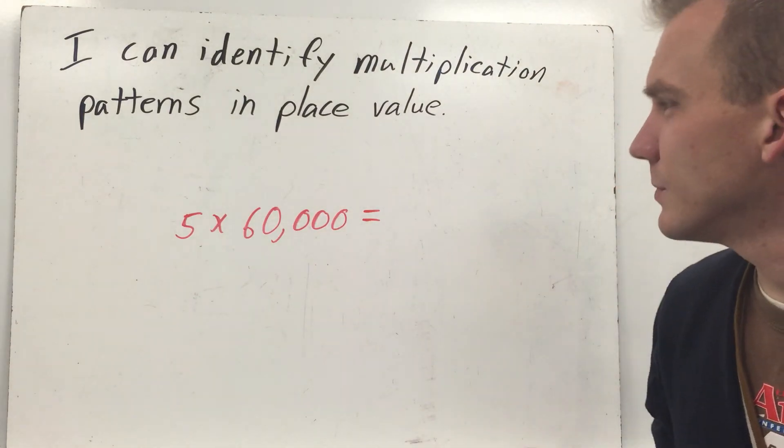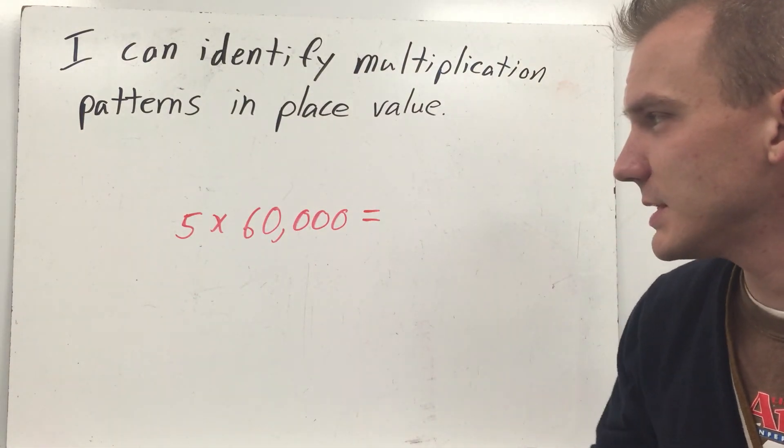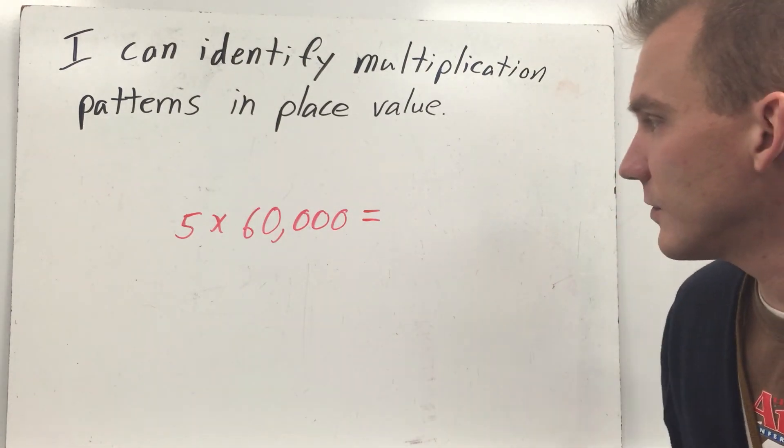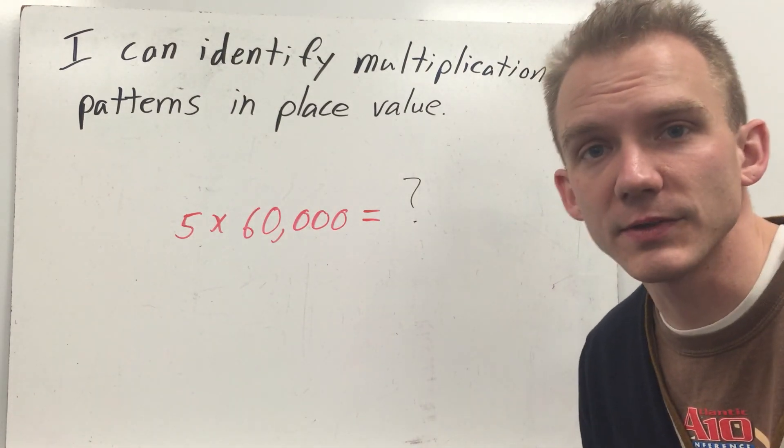I can identify multiplication patterns and place value. It's pretty simple. You just multiply five times six and then add in your zeros. See if you can figure out what five times sixty thousand is.